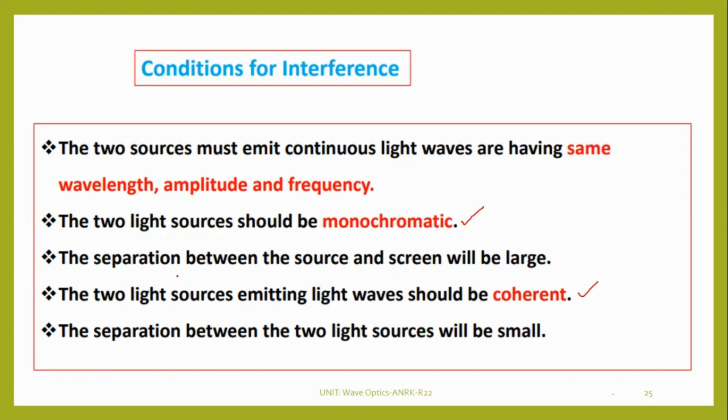Next one is the separation between the source and the screen. Source means from where light is emitting, and the screen is where we are observing. The separation between these two should be large, and the separation between the two light sources will be small.